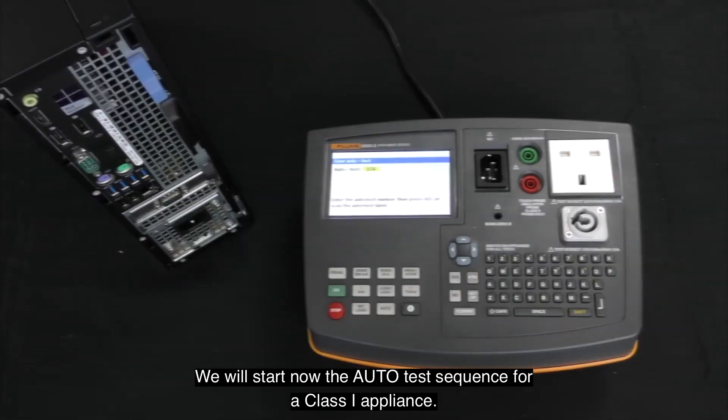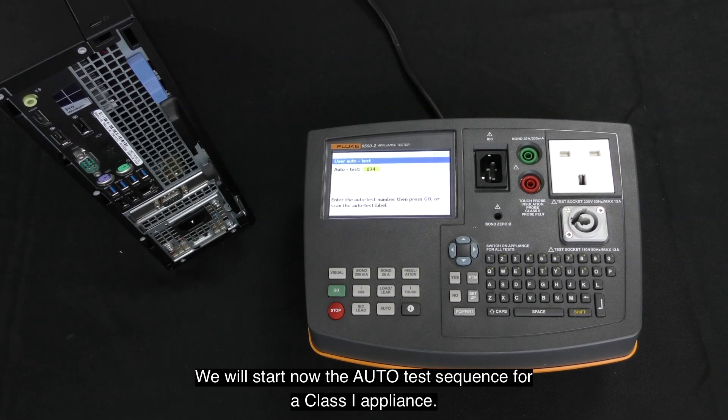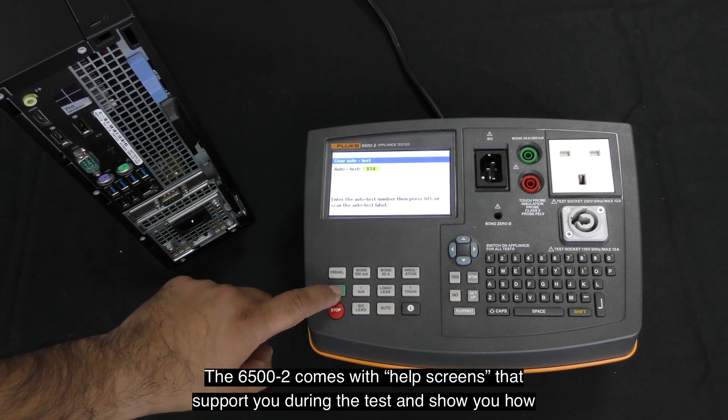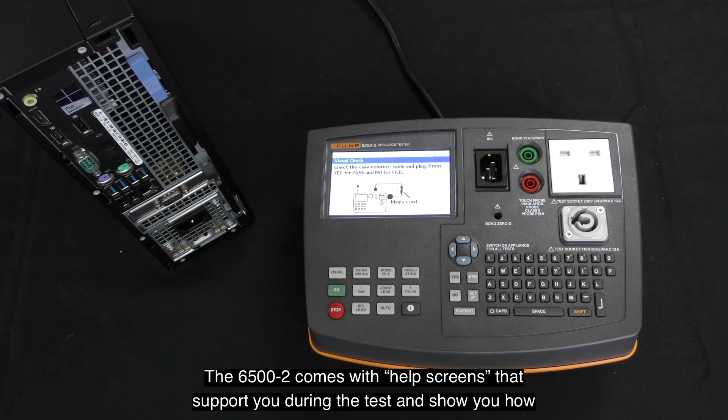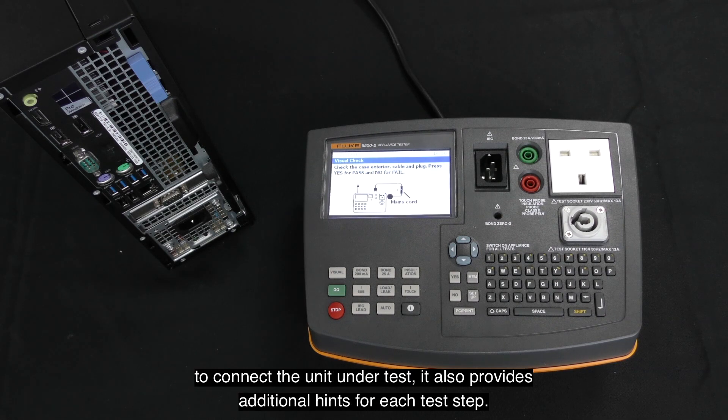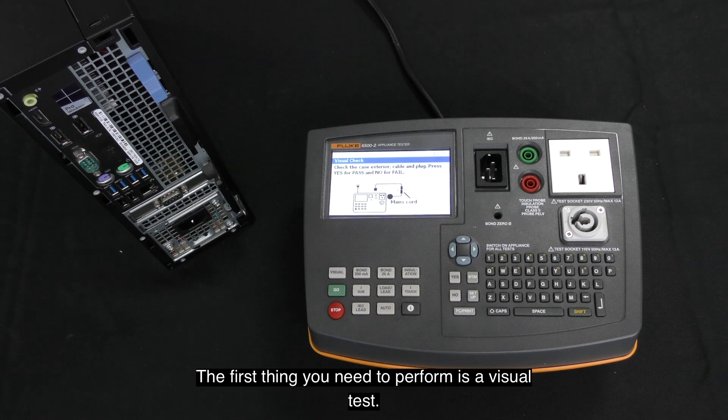We will start now the auto test sequence for a Class 1 appliance. The 6500 Mark II comes with help screens that support you during the test and show you how to connect the unit under test.